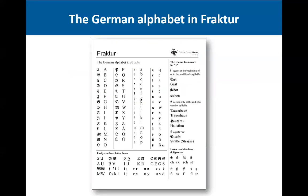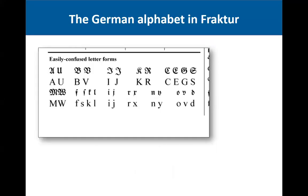In your handout I've included a Fraktur chart with the Fraktur letter forms and their Roman type equivalents. One of the challenges with the Fraktur typeface is that some letter forms closely resemble each other — especially B and V, J and I, and over here C, E, G, and S. The M and W can often be confused as well.